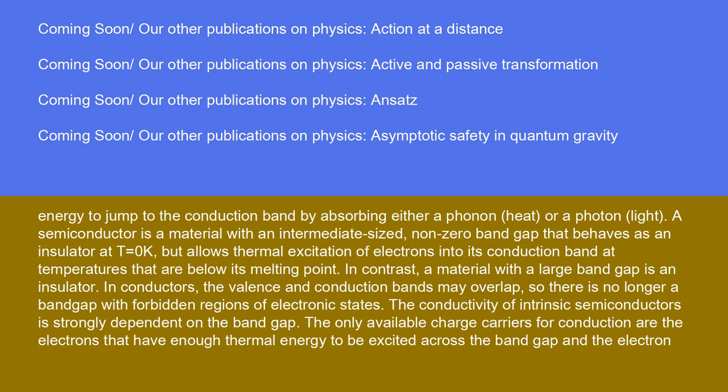A semiconductor is a material with an intermediate-sized, non-zero band gap that behaves as an insulator at T equals zero K, but allows thermal excitation of electrons into its conduction band at temperatures that are below its melting point. In contrast, a material with a large band gap is an insulator. In conductors, the valence and conduction bands may overlap, so there is no longer a band gap with forbidden regions of electronic states.